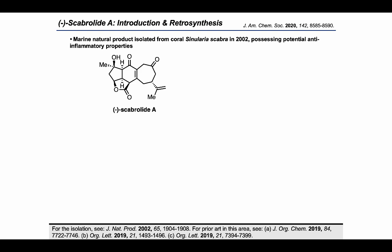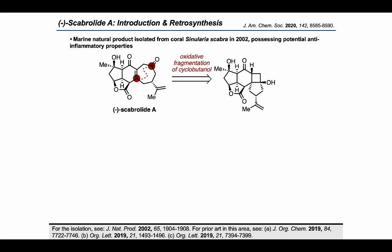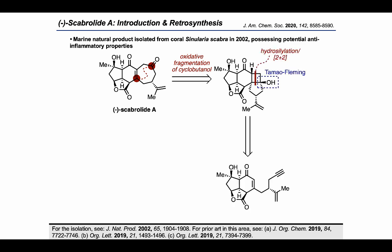In their retrosynthetic analysis of this target, the Stoltz Group imagined that if you were to reconnect the beta-carbon of the enone and the carbonyl of the cycloheptanone, it might be possible to apply an oxidative fragmentation tactic that would originate from a cyclobutanol starting material. The virtue of this type of cyclobutanol as a synthetic intermediate is that you could think about accessing it through a 2+2 cyclization process, where the alcohol may arise from the Tamao-Fleming oxidation of a silane, which in turn could be installed by a hydrosilylation reaction.